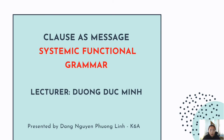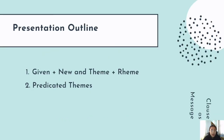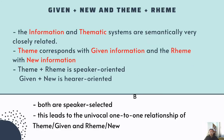My name is Nguyễn Phương Linh from K6A, and today I'm going to present two parts of clause as message. The first is given/new and theme/rheme; the second is predicated themes. The information and thematic systems are semantically very closely related: themes correspond with given information and the rheme with new information. Although they are related, they are not the same thing. While theme is what I, the speaker, choose as my point of departure, the given is what you, the listener, already know. So theme and rheme are speaker-oriented, while given and new are hearer-oriented, but both are speaker-selected. The speaker relies on a rich verbal or non-verbal environment upon which he or she builds what is to follow, leading to the relationship of theme–given and rheme–new.